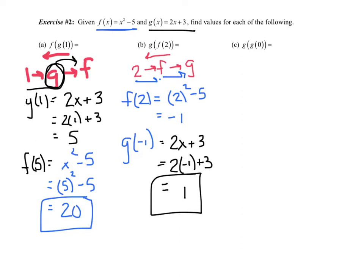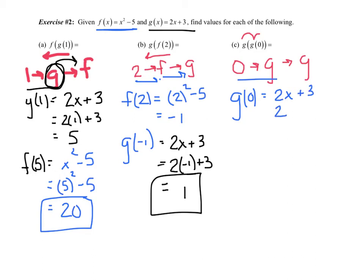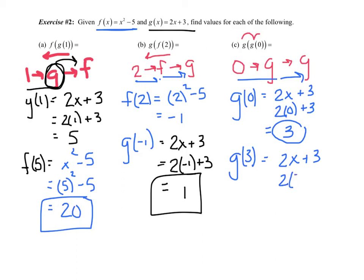Let's see if you've got it. We're going to find G of G of 0. So 0 goes into G, and that output goes back into G. G of 0 is 2(0) plus 3, which is 3. Now G of 3 is 2(3) plus 3, which is 6 plus 3 equals 9.